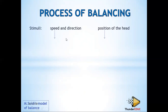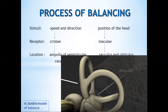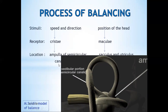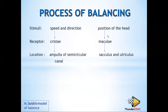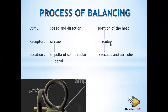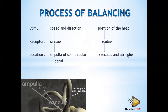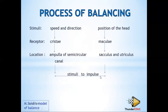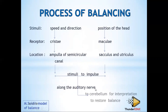Now, writing what is needed: change in the speed and direction of the head stimulates the cristae found in the ampulla of the semicircular canal. Change in the position of the head stimulates the maculae found in the saccular and utriculars. The stimuli are being converted into impulse, and the impulse is sent to the brain along the auditory nerve for interpretation.